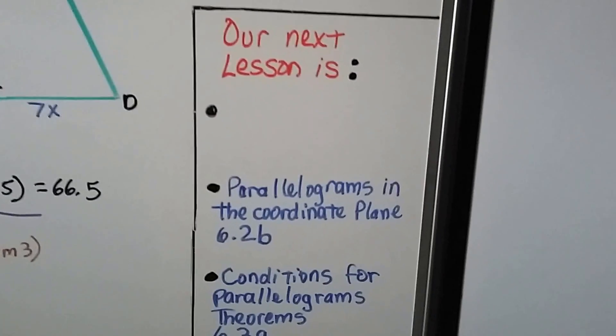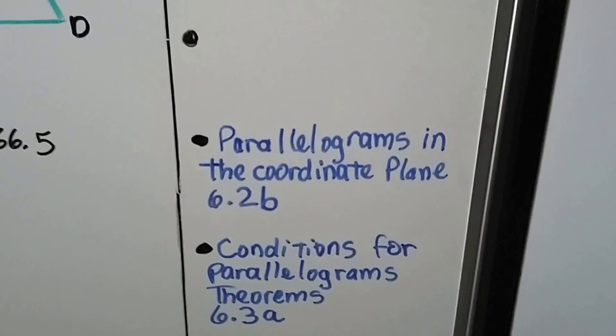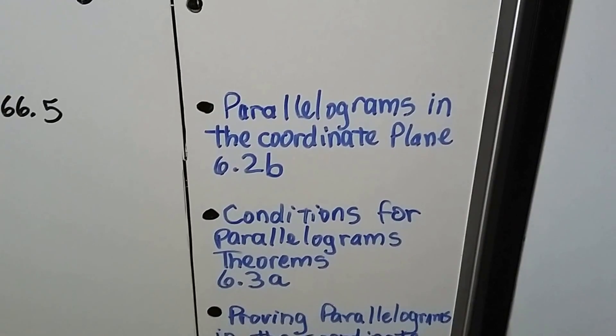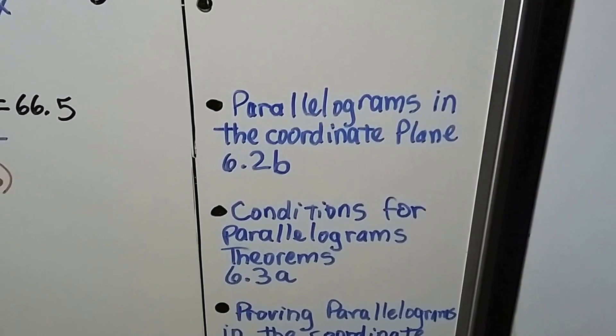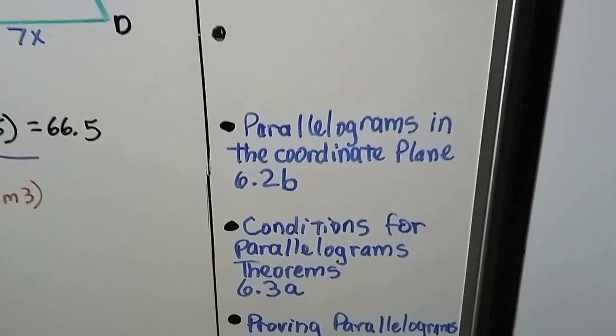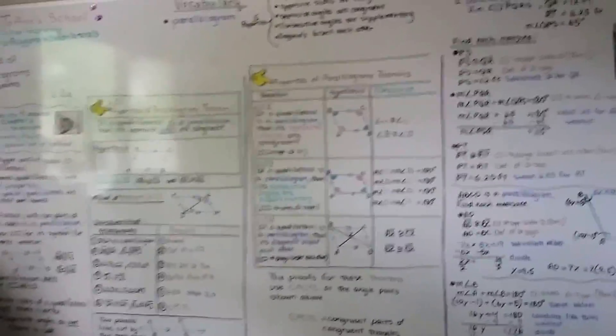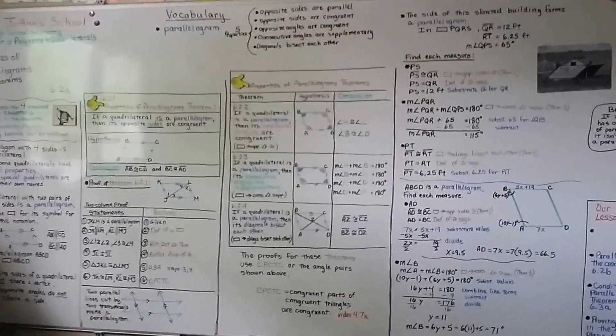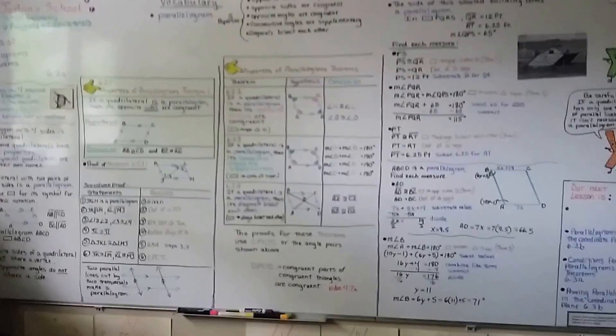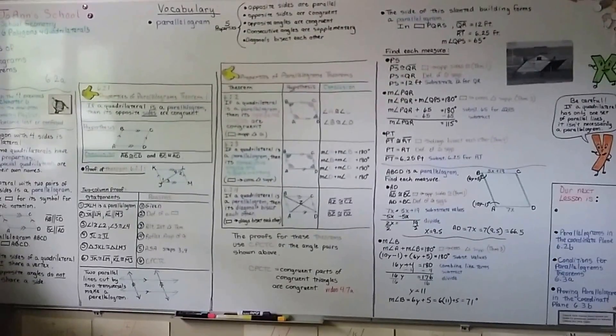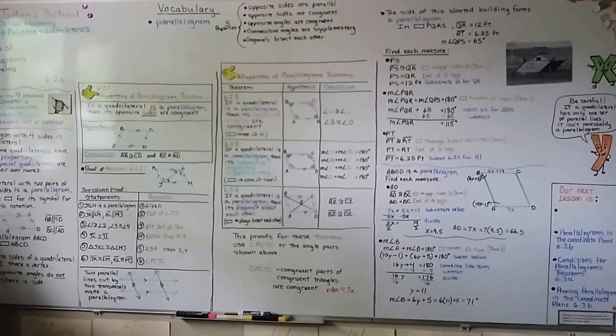Our next lesson is a continuation of this one. It's parallelograms in the coordinate plane 6.2b. After that, we're going to do conditions for parallelograms theorem 6.3a. So hope you were able to write down these theorems if you needed them in your theorem notes. So you can use them for proofs and keep trying. I believe in you. I'll see you next time. Hit the like button. Bye.